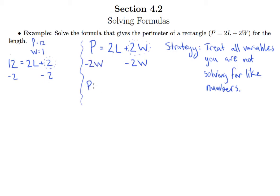So I'm left with P minus 2W on the left side and 2L on the right side. And here, of course, the only thing left to do is to get rid of this 2 in front of the L. And so we will divide both sides by 2.